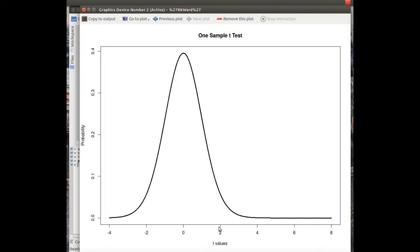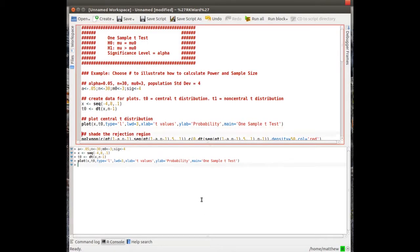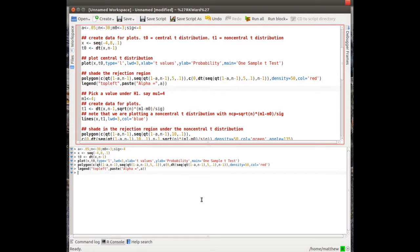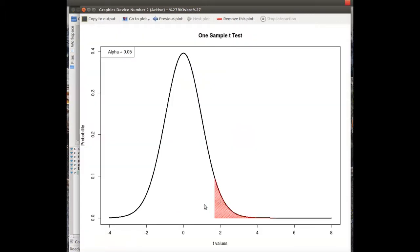So we need to find a critical value that makes this region 0.05 or α, and we will plot that. Here we go. Now if we were to conduct this test, we'd calculate the test statistic and see where it falls. If it's greater than this value, we'd reject the null hypothesis. If it's less, we would not reject it.